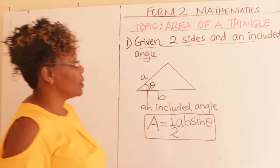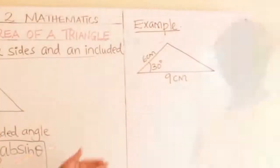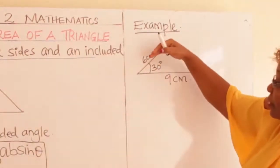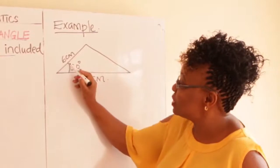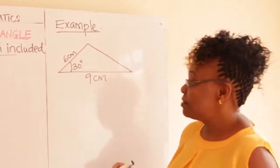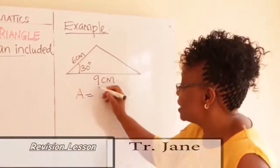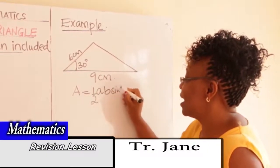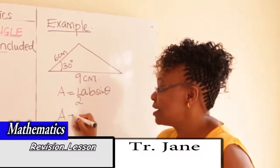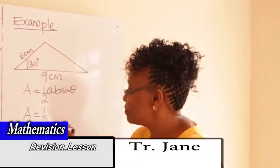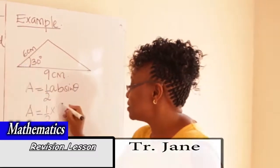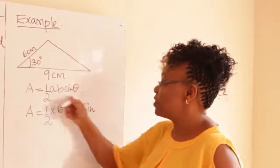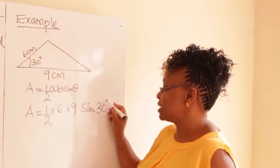Let us go straight to an example. In this triangle, you are given the two sides — this one and this one — and in between the two sides you have an angle theta. Area of a triangle, as we have said, is a half times A times B times sine theta. In our case, the area equals a half times six times nine times sine 30 degrees.